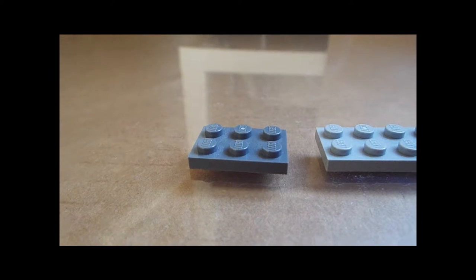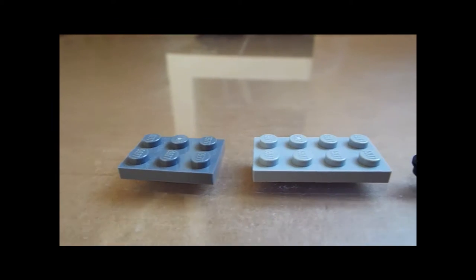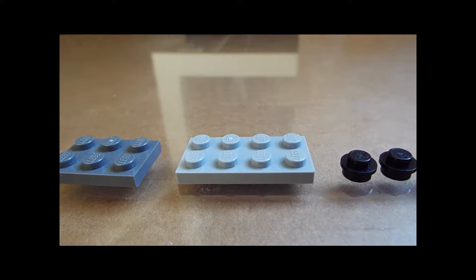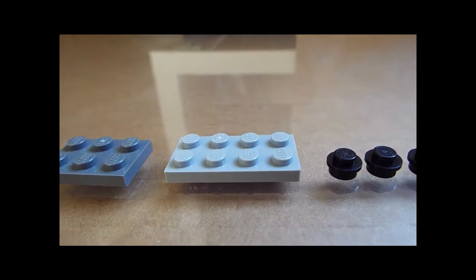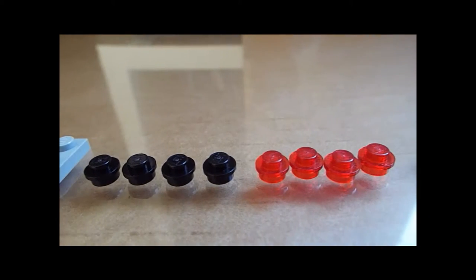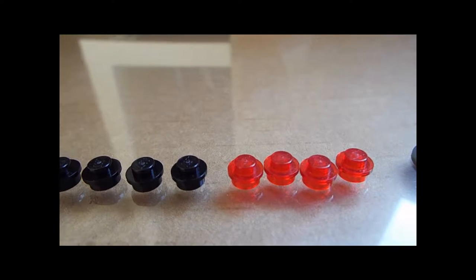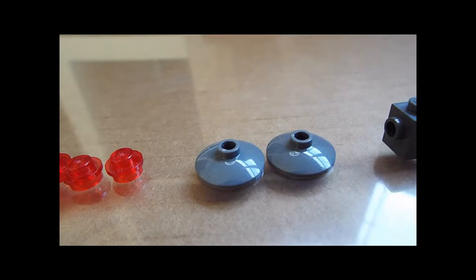Okay, so we're going to need a 3x2 gray piece, a 4x2 light gray piece, 4 black studs, 4 sort of see-through red studs, and 2 of these dark gray discs.